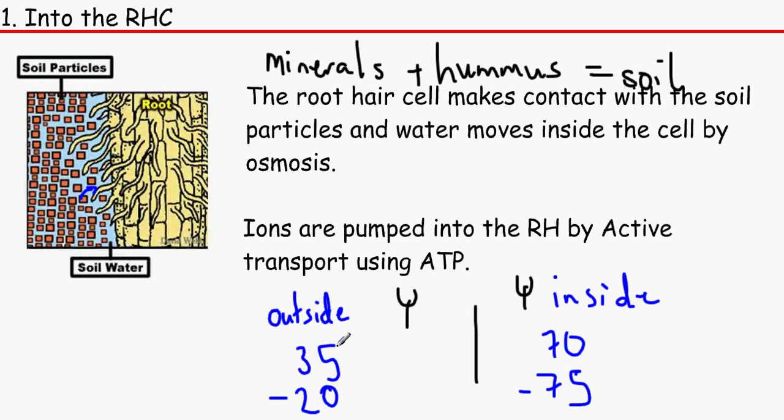The ions on the other hand are pumped into the root hair by active transport using ATP, which the mitochondria has produced. ATP is just an instant release of chemical energy whenever it needs it, kind of like money.